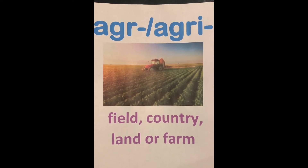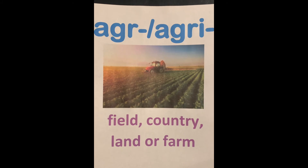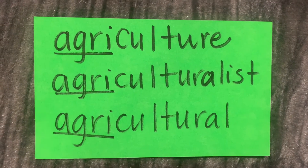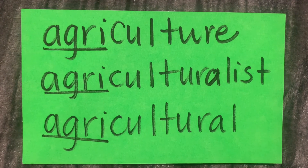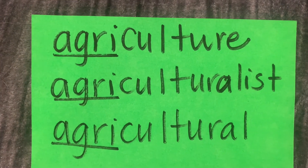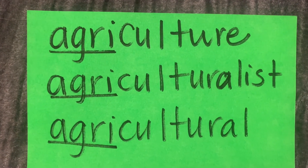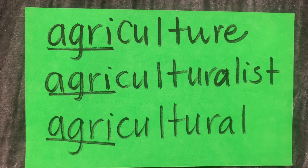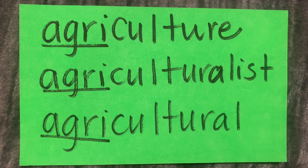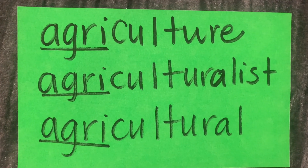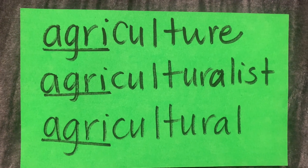Agriculture represents all of the plants that you see in the field. Some words you may know with the root agri, which means field, country, land, or farm, are agriculture, agriculturalist, and agricultural.